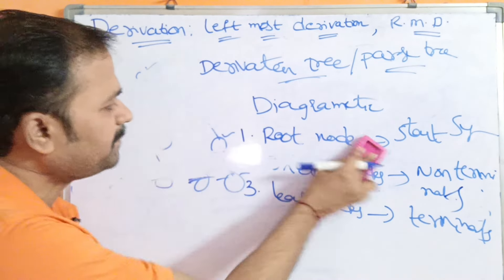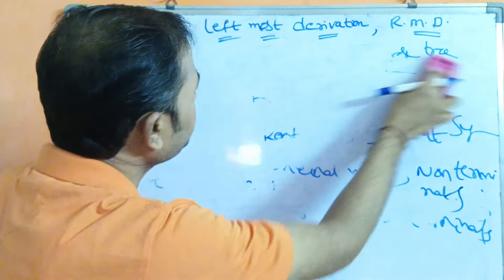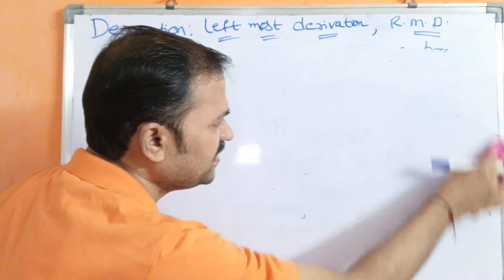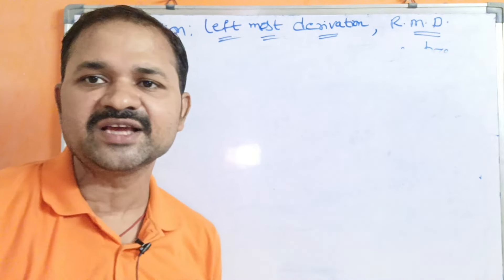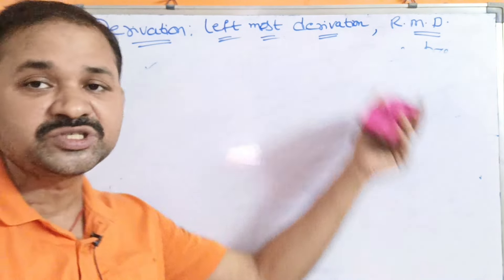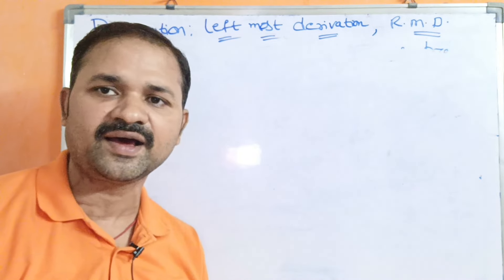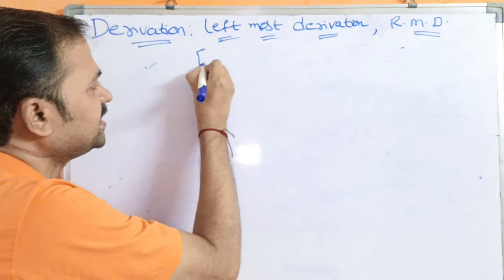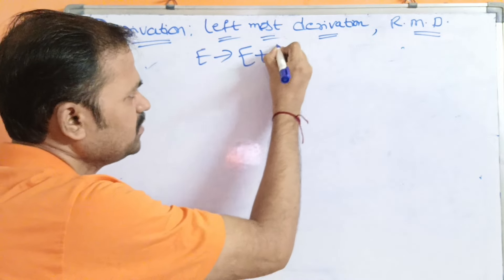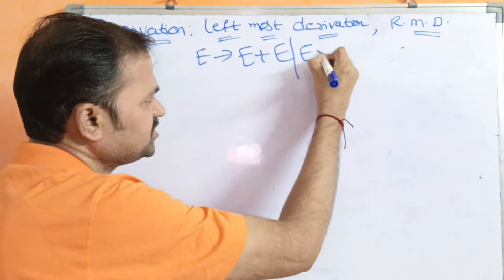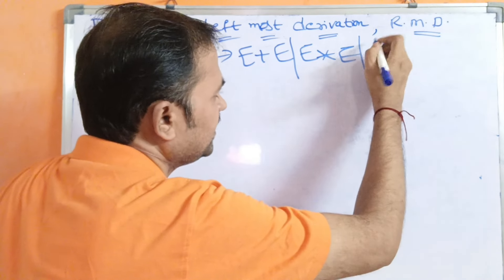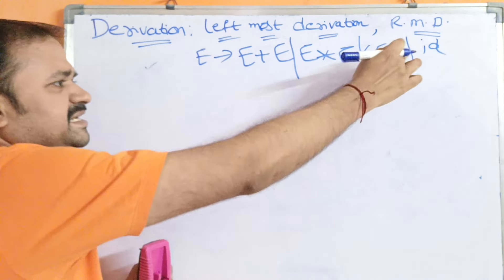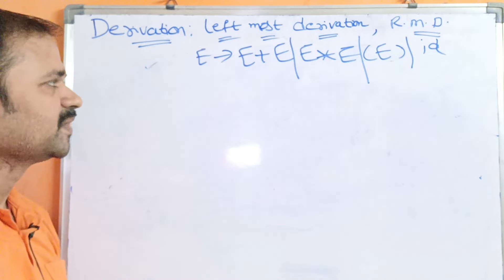Now let us see an example to obtain leftmost derivation, rightmost derivation, leftmost derivation tree, and rightmost derivation tree. Let the grammar contain productions: E produces E plus E; E produces E star E; E produces left parenthesis E right parenthesis; and E produces id.